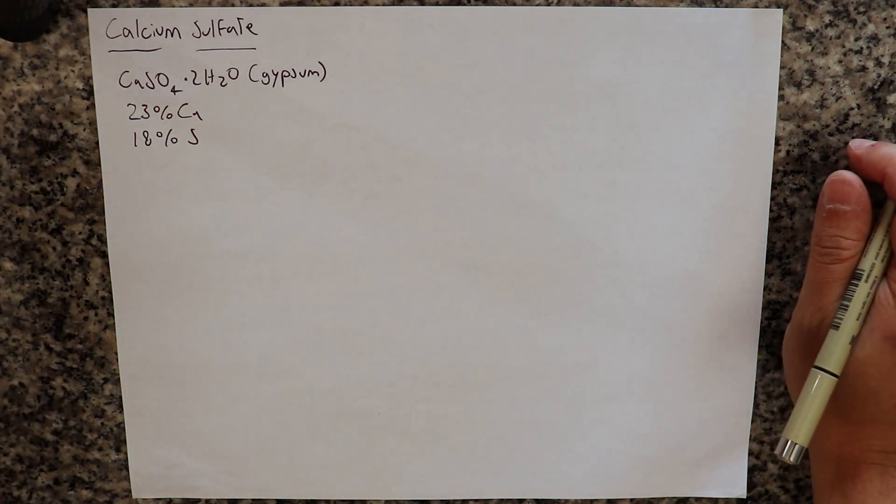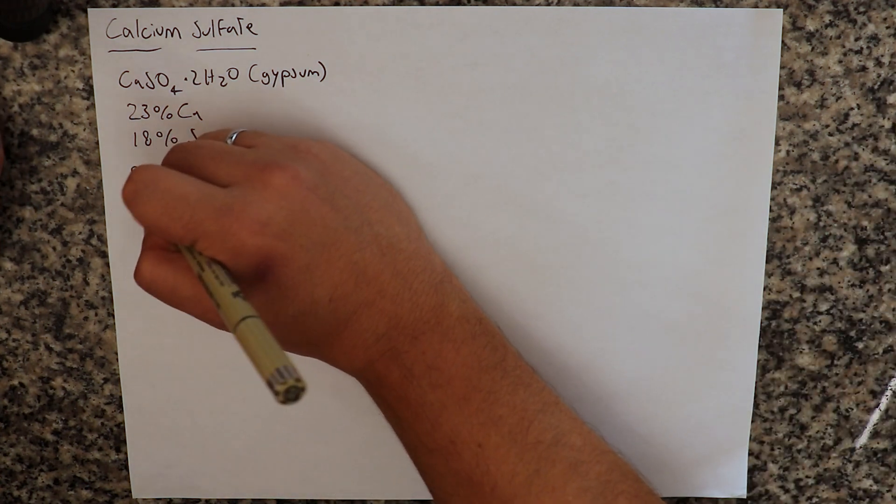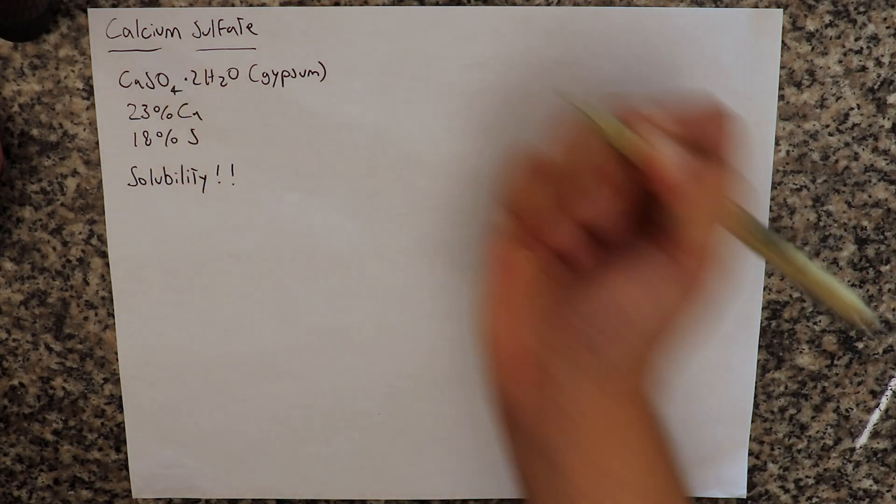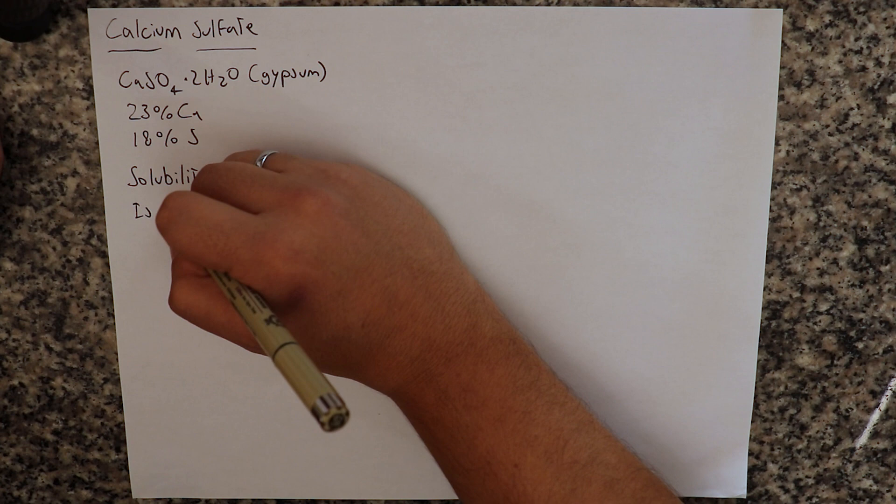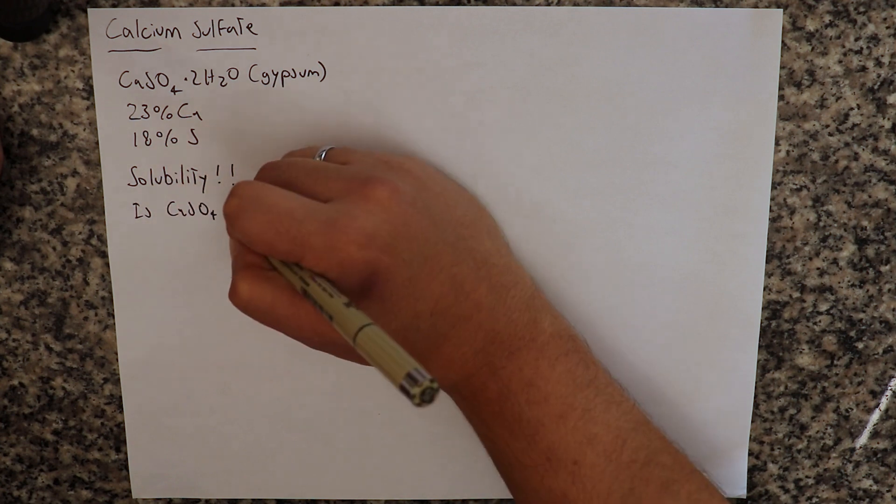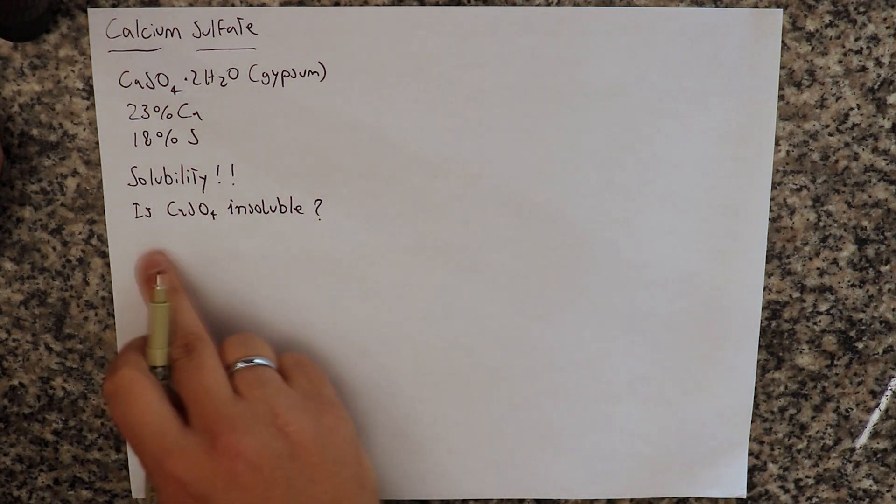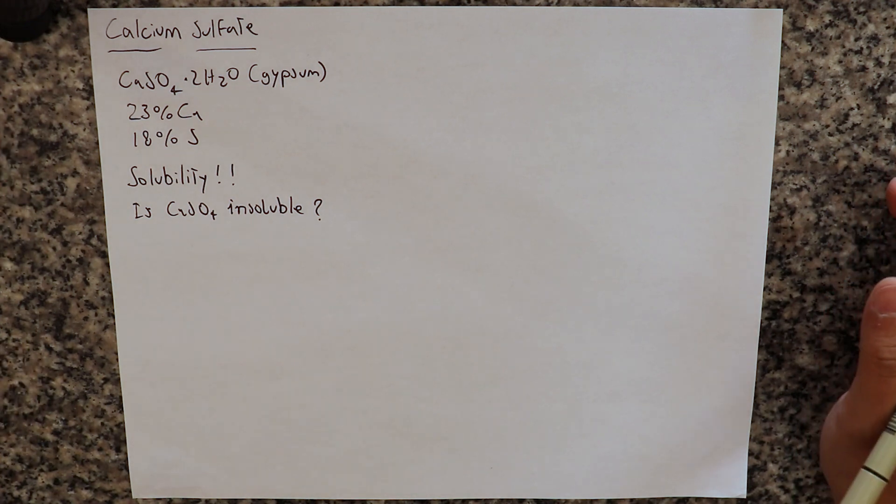Now why do most people say you cannot use this in hydroponics? Well, the answer is solubility. So that's the main issue with calcium sulfate, but really is calcium sulfate insoluble? That's the question we want to answer: is calcium sulfate insoluble and what does it mean for something to be insoluble?